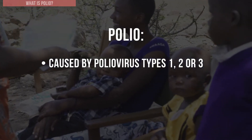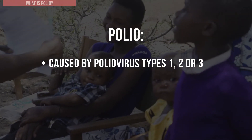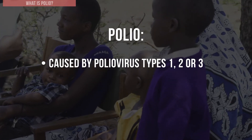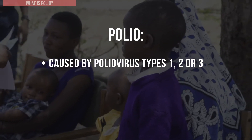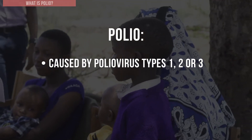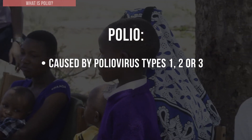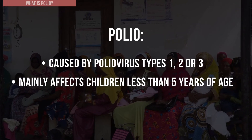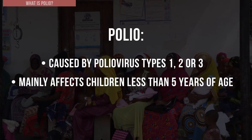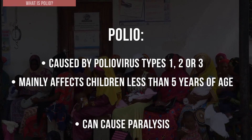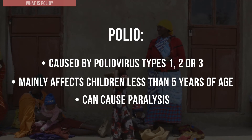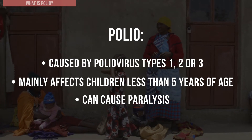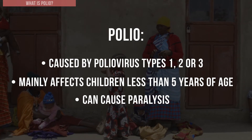These are also called wild polio viruses, since they are the naturally occurring types that circulate and infect people. Polio mainly affects children less than five years of age. Polio virus can cause irreversible paralysis by attacking the spinal cord.